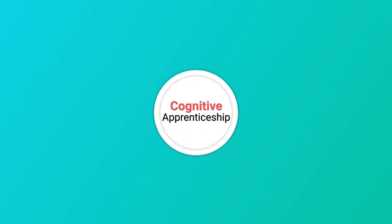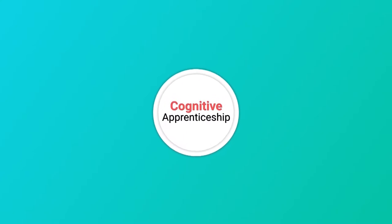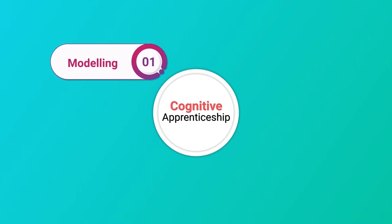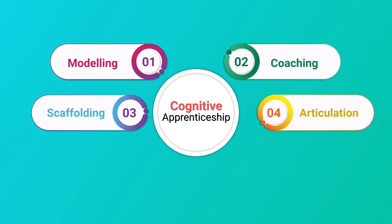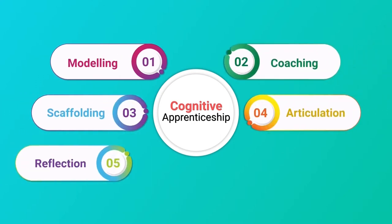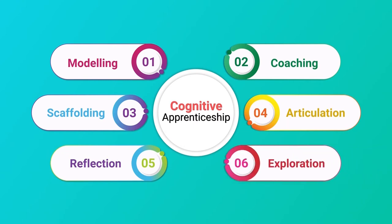So cognitive apprenticeship takes place from modeling to coaching to fading. Cognitive apprenticeship actually includes more processes: modeling, coaching, scaffolding, articulation, reflection, and exploration. These are the six processes involved in cognitive apprenticeship.